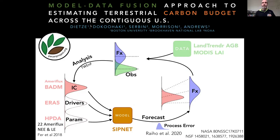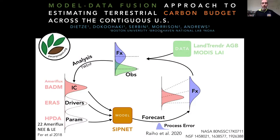I want to draw your attention to two key parts of this title. First, the idea of a carbon budget. There are a lot of different data products that tell us about parts of the carbon cycle, but don't give us a complete understanding of the carbon budget like we would get from detailed field studies at a site scale. How do we scale that kind of understanding of carbon budgets — the pools, the fluxes, how they interact, and how we can close those mass balances?